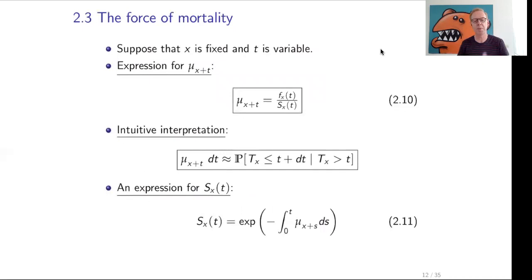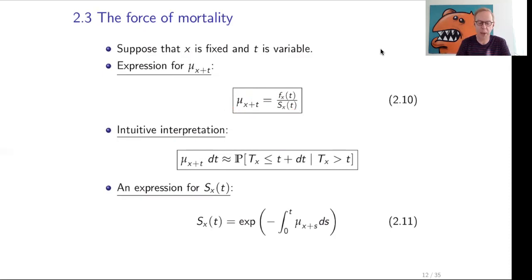Now suppose x is fixed — for instance, a person of age 30 — and the variable is t. Consider mu_{x+t}, the force of mortality at age x plus t. From the expressions derived, the force of mortality at age x+t equals the density function of x at time t divided by the survival function S_x(t). Intuitively, mu_{x+t} · dt is the conditional probability that (x) will die before time t plus dt, given that (x) is still alive at time t.